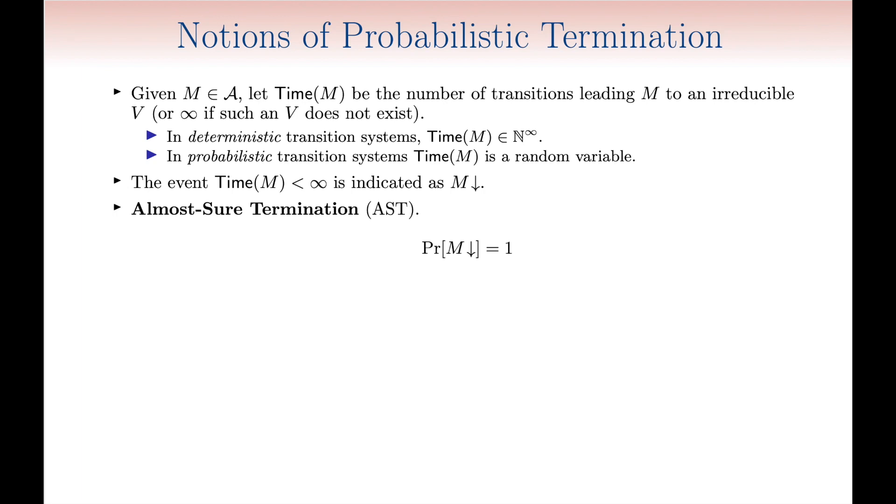One first way of spelling out termination in a probabilistic setting consists precisely in stipulating that termination seen as a probabilistic event has probability 1. This is the so-called almost sure termination.